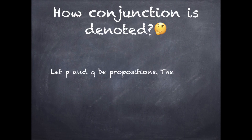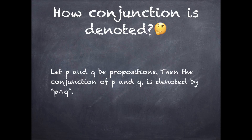How is conjunction denoted? Let p and q be propositions, then the conjunction of p and q is denoted by p AND q.